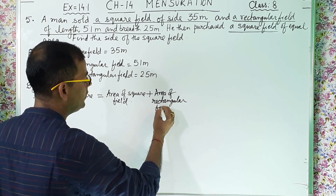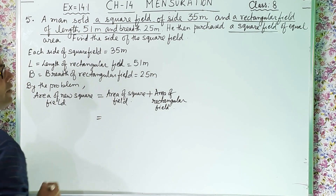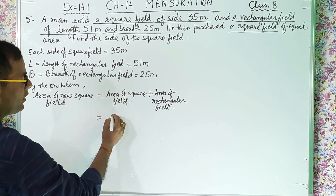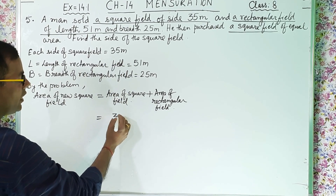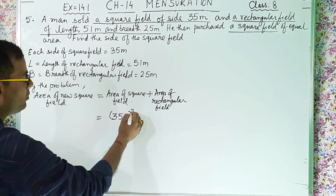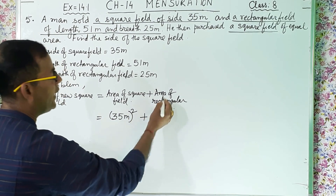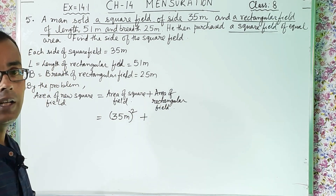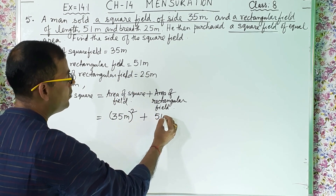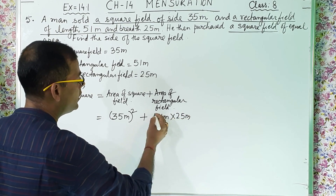So by the problem: area of new square field equals area of square field plus area of rectangular field. Area of square field equals side squared, so 35 meter squared. Plus rectangular field area equals length into breadth, so 51 meter into 25 meter.